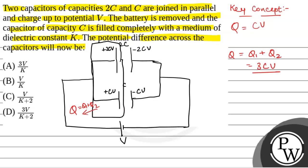Now after the battery is removed, this is the capacitor of capacitance 2C, the battery is not connected and this is the capacitor of capacitance C. A material of dielectric constant K is inserted in the capacitor of capacitance C. The new capacitance will be K into C.